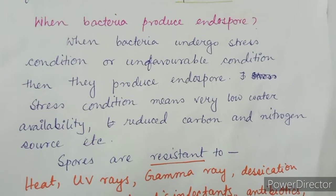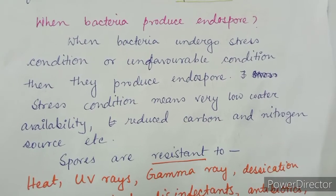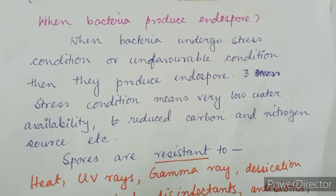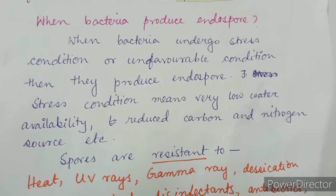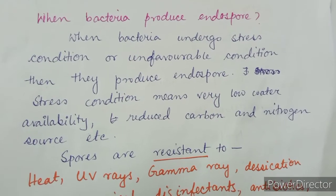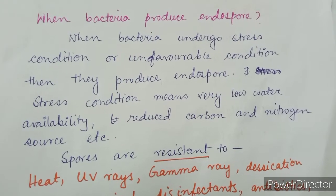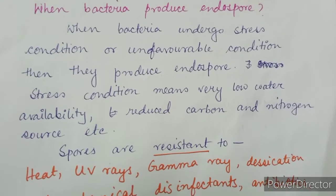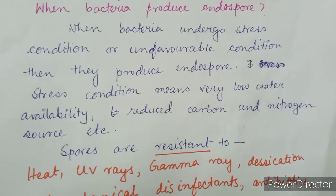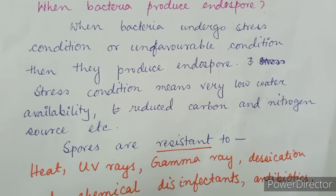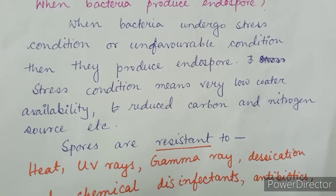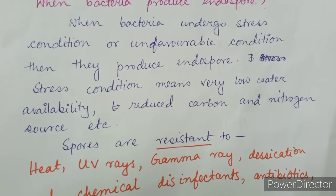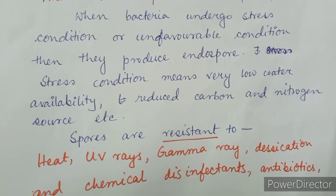Why do some bacteria produce endospores and when are endospores produced? When bacteria undergo stress conditions or unfavorable conditions, then they produce endospores. Stressed conditions include very low water availability, dehydration, and reduced carbon and nitrogen sources.